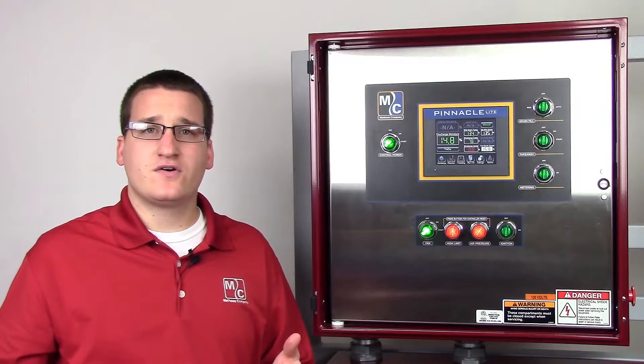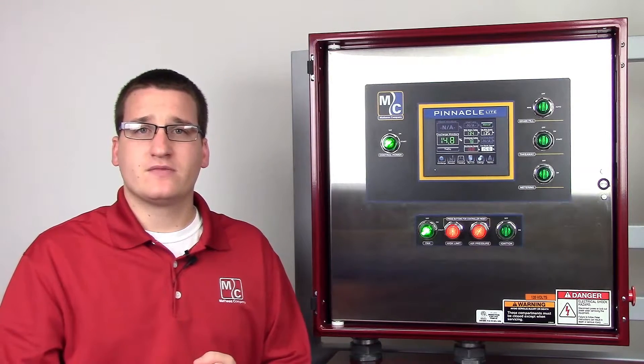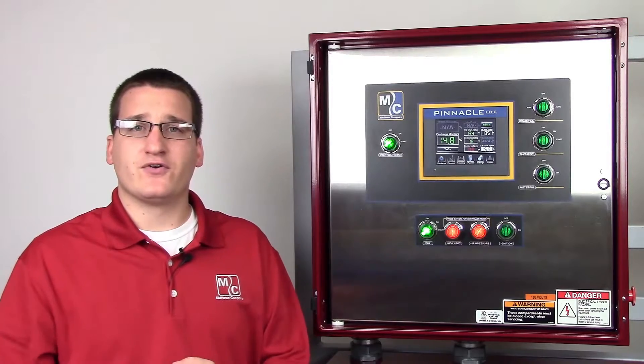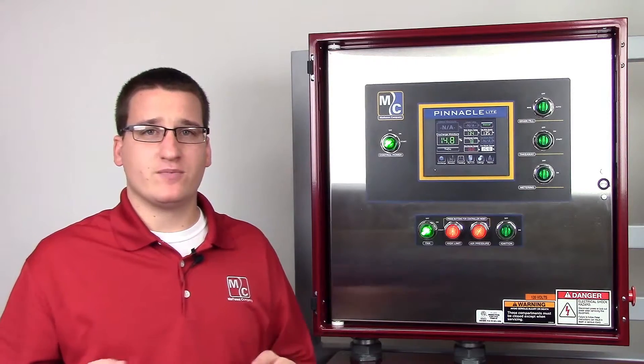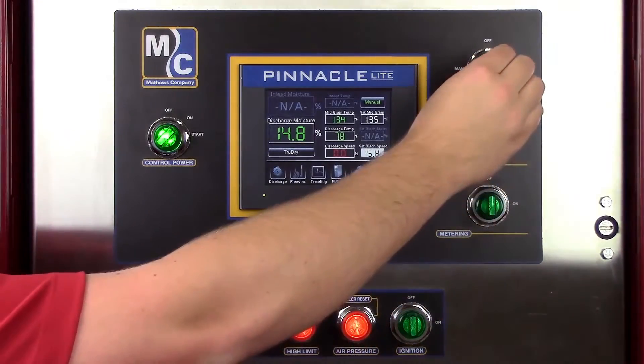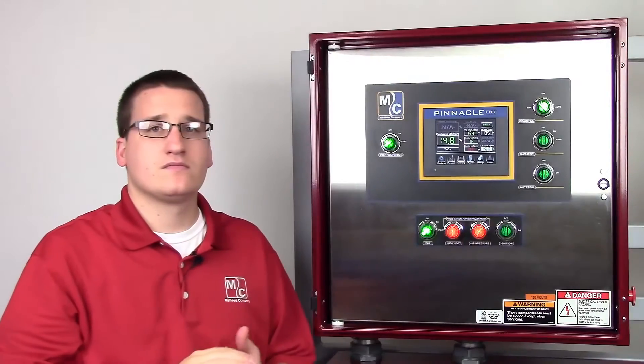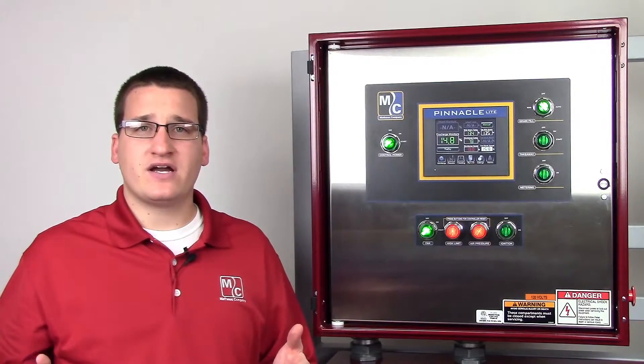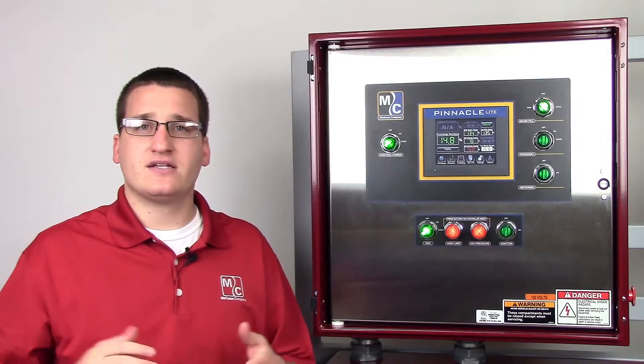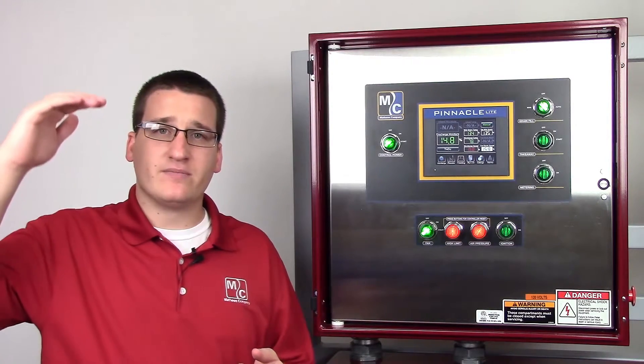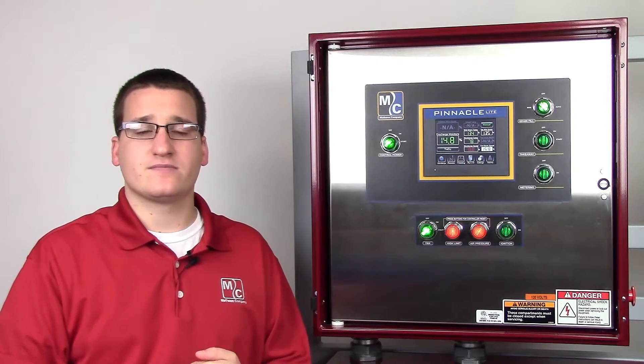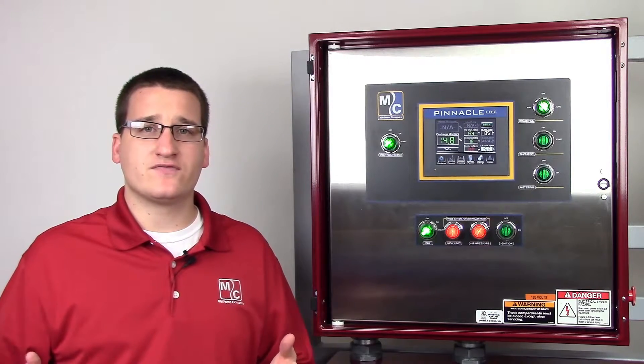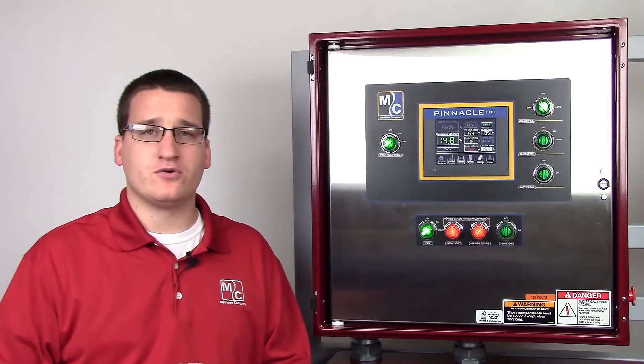If you have not already done so, you can now fill the dryer. You do this by turning the grain fill switch to the manual position. This will tell the dryer to begin calling for grain and to continue to do so until grain gets all the way to the bin switch at the top of the dryer. You'll know the dryer is full when the switch is no longer illuminated.